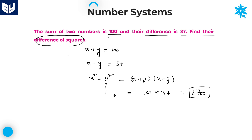The answer is 3700. Understanding the question is very important here. The given information is sum of two numbers and difference of two numbers. Some students by confusion calculate x minus y whole squared — but that is the square of their difference, not the difference of their squares. The question asks for x squared minus y squared, which is 3700.